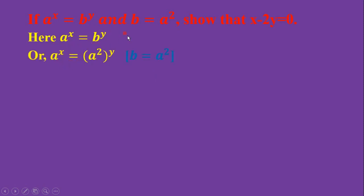as it is. Here b = a^2, then you can write b^y = (a^2)^y. As it is, and then a^x as it is. Your powers will be multiplied, then a^(2y)